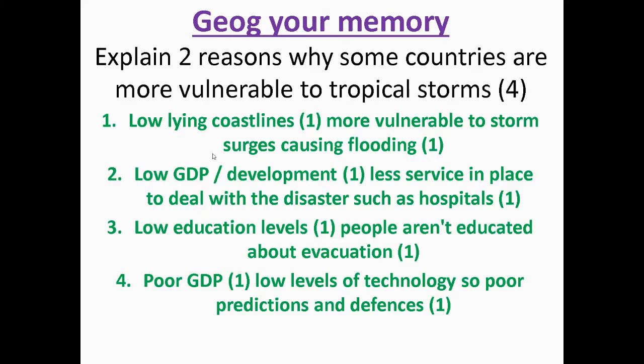The second category is about levels of development and the economy. If you have a lower GDP, there might be fewer services in place to deal with disasters — such as hospitals — raising the number of deaths or the overall impact in your region. Lower education levels mean fewer people are educated about evacuation, making them more likely to suffer from the storm's impacts rather than getting away from it. Poor GDP also means lower levels of technology, so predictions and defenses can't be implemented effectively.